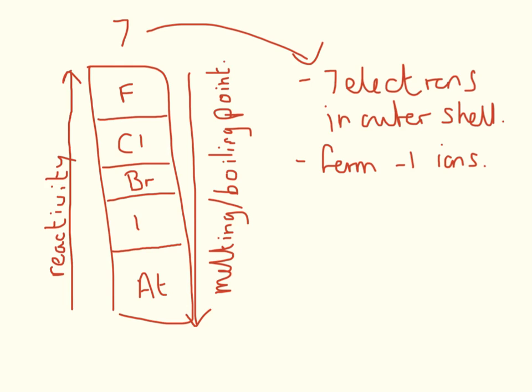So their reactivity increases as you go up the table. So fluorine up here is the most reactive, and astatine is the least reactive. And the melting and boiling point increases as you go down the table.